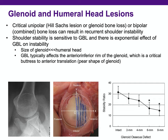The glenoid and humeral head bone stock is the third important factor providing stability. Critical unipolar or bipolar bone loss can result in recurrent shoulder instability. Shoulder stability is particularly sensitive to glenoid bone loss, with an exponential effect, because the glenoid is much smaller than the humeral head — very small glenoid loss results in far greater instability. Glenoid bone loss typically affects the anterior inferior rim, which is the most important buttress to anterior translation.